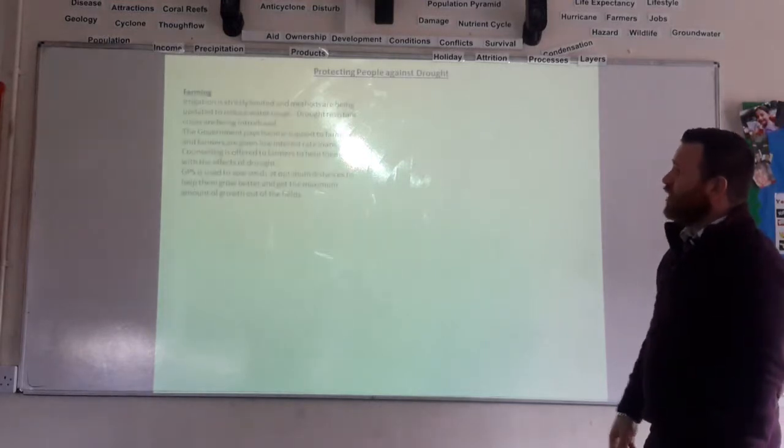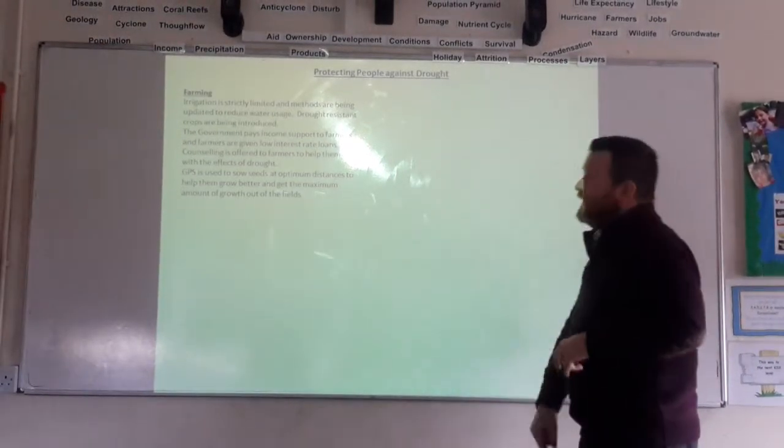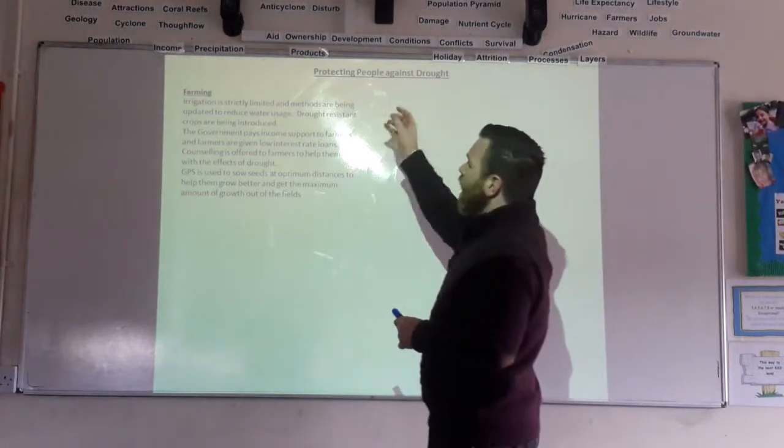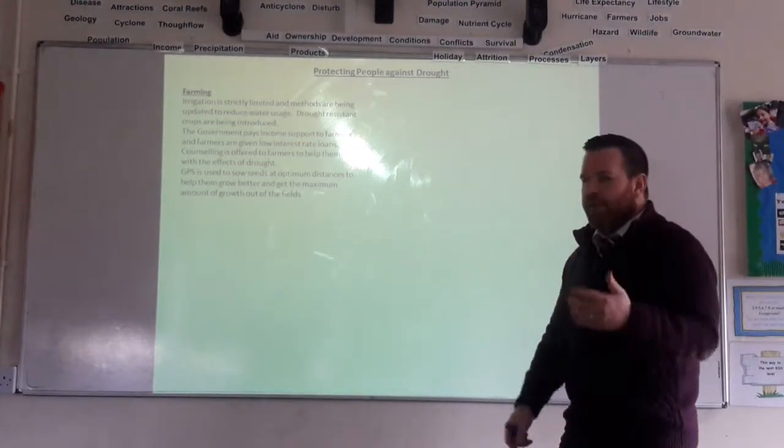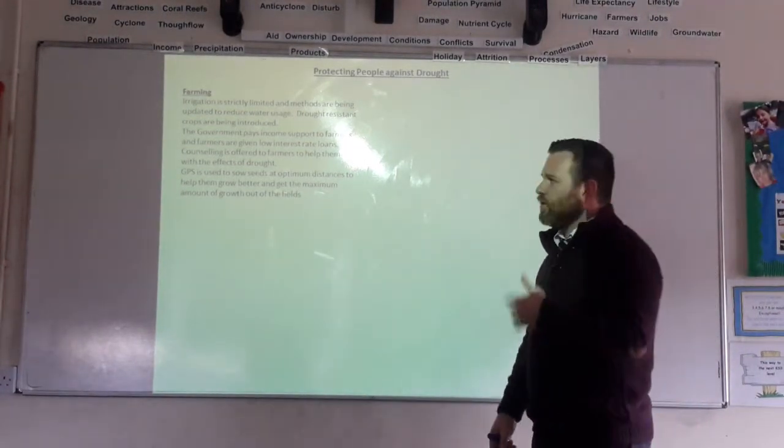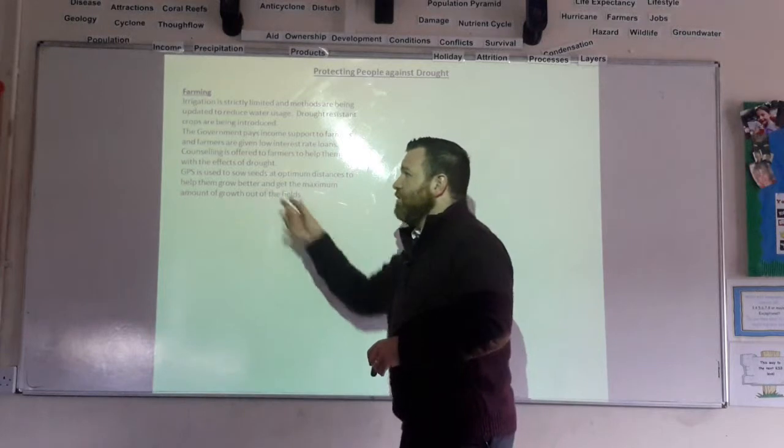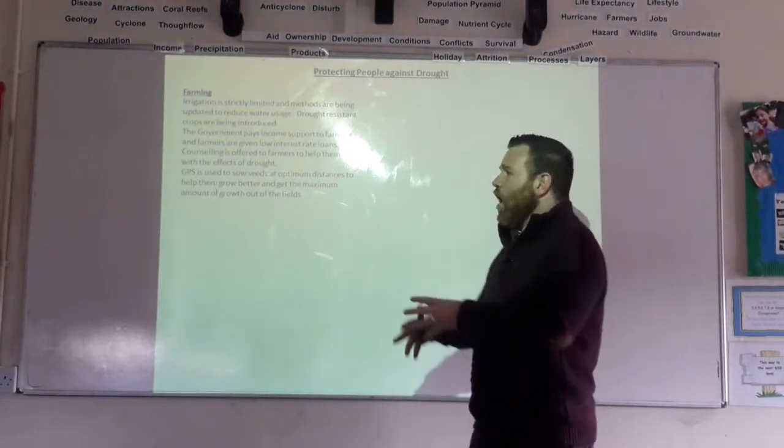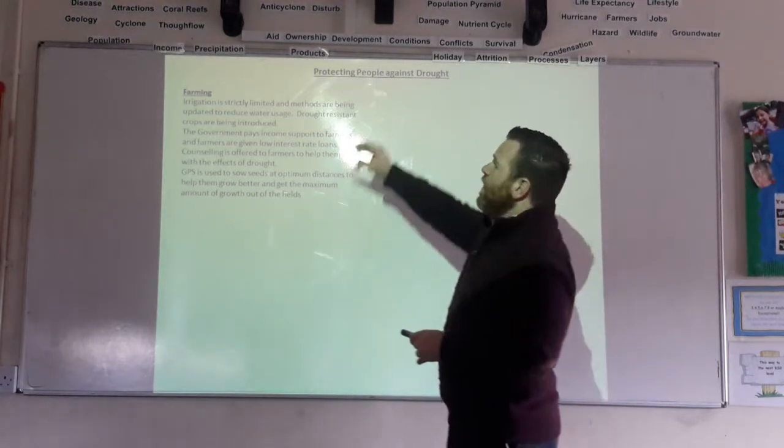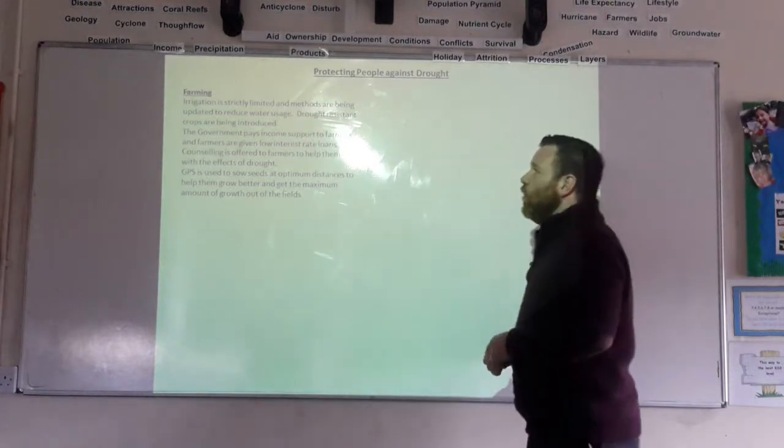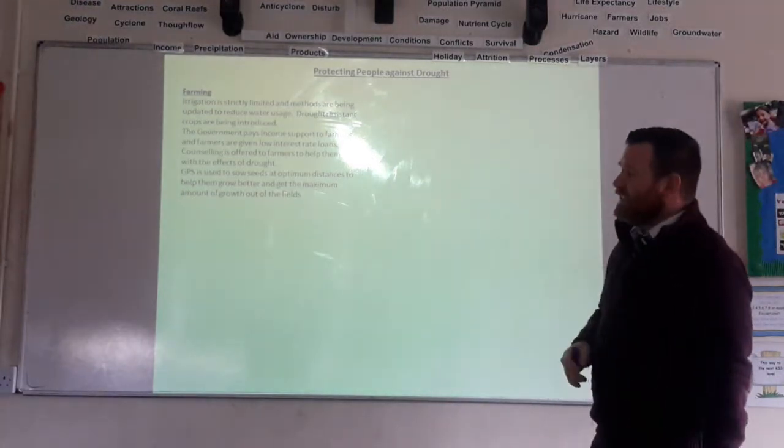Our final point is how you can protect people against drought. And I'm just going to give you a few ideas, and perhaps you pause if you need to make notes. So, within farming, in terms of protecting people, the government can pay income support to farmers, or give them low-interest-rate loans when they have suffered as a result of losing their crops. That's more of an MEDC method. You can use GPS to sow your seeds, put seeds in the ground at optimum distances, so that they grow better, even in times of drought. And they can also limit irrigation and water usage, and try and use drought-resistant crops. But a lot of those are very much MEDC methods.